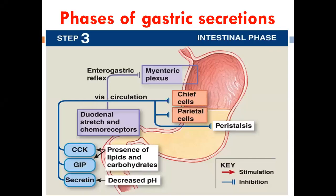This is the last phase of gastric secretion, called the intestinal phase. Now the chyme has moved into the duodenum. Gastric emptying of chyme into the duodenum stimulates the cells that produce cholecystokinin — the I-cells. So the I-cells will be stimulated to produce cholecystokinin.